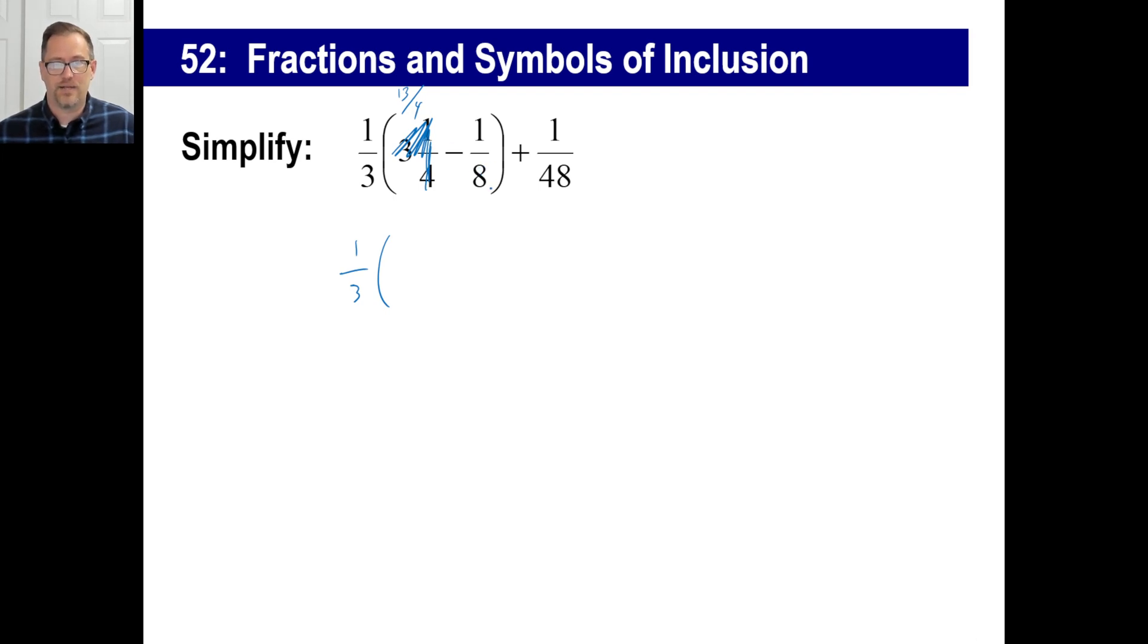Minus an eighth. Well, let's don't do fourths and eighths. Of course, we want eight as our common denominator, right? So let's go ahead and do twenty-six-eighths. That's the same thing as thirteen over four. Minus an eighth.